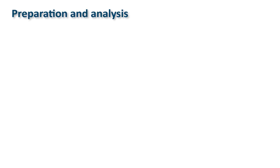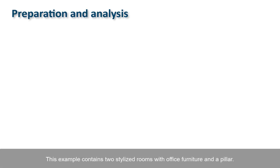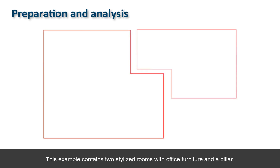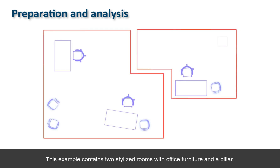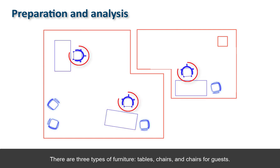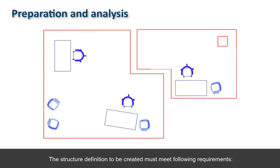Preparation and Analysis. This example contains two stylized rooms with office furniture and a pillar. There are three types of furniture: tables, chairs, and chairs for guests. The structure definition to be created must meet the following requirements.